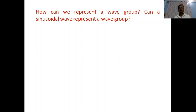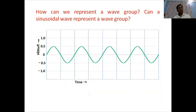Another question is: how do we represent a wave group? We are assuming we have to associate a wave group — a de Broglie wave or matter wave — with a moving particle. So how should such a wave group be represented? Can a sinusoidal wave represent a wave group? A sinusoidal wave extends from minus infinity to plus infinity. But a particle is a localized entity; therefore, the spread of the wave associated with a moving particle must be limited and finite. So the representation of a wave group by a sinusoidal wave is certainly ruled out.